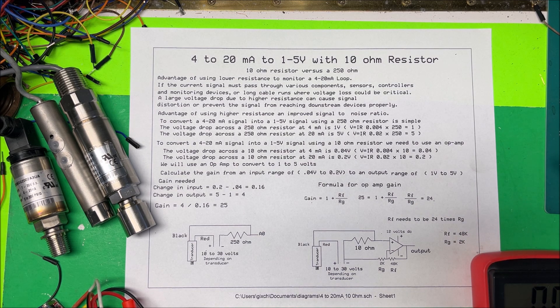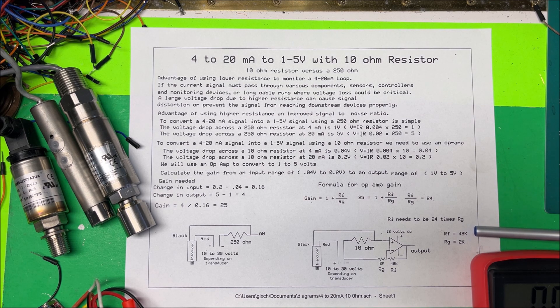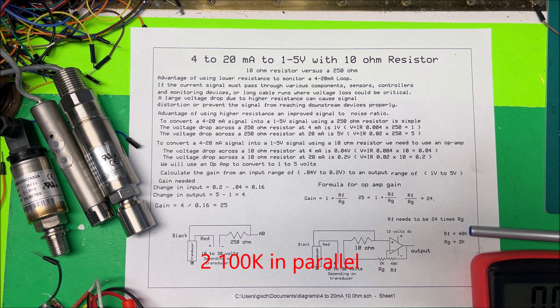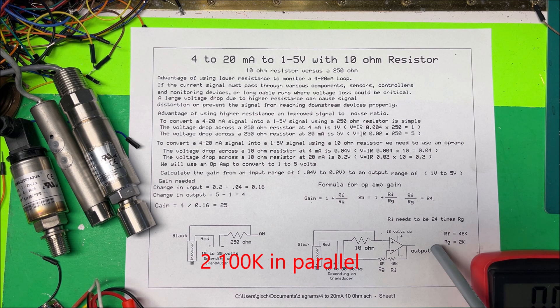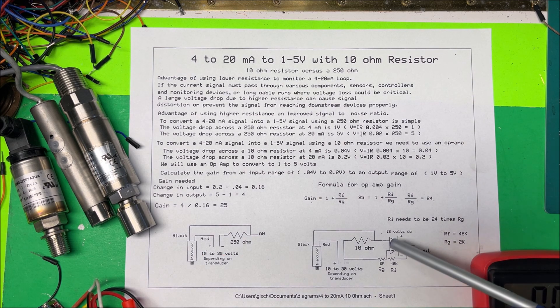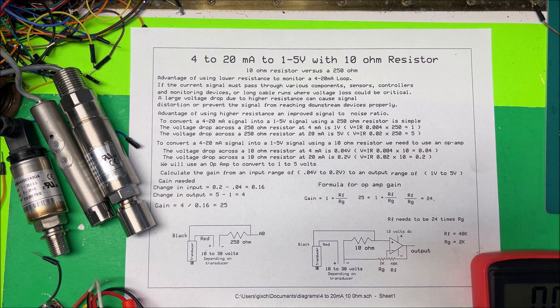So I was going to pick a 2k and a 48k, but I didn't have a 48k. I had a 200k, so that's 50k, and then I put a pot in here to adjust it to get the right ratio there, so I have my gain of 24.